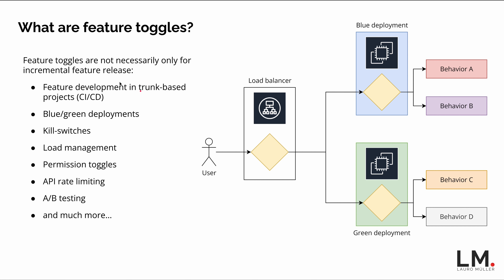Feature toggles aren't only for incremental feature release. We can use them in trunk-based development — if a feature isn't ready for general release but we want beta testers to get early feedback, we can hide it behind a toggle and turn it on only for specific user groups. We also have blue-green deployments, and kill switches — for example, when the application is under high load and we want to turn off non-critical parts to redirect resources to more critical ones.